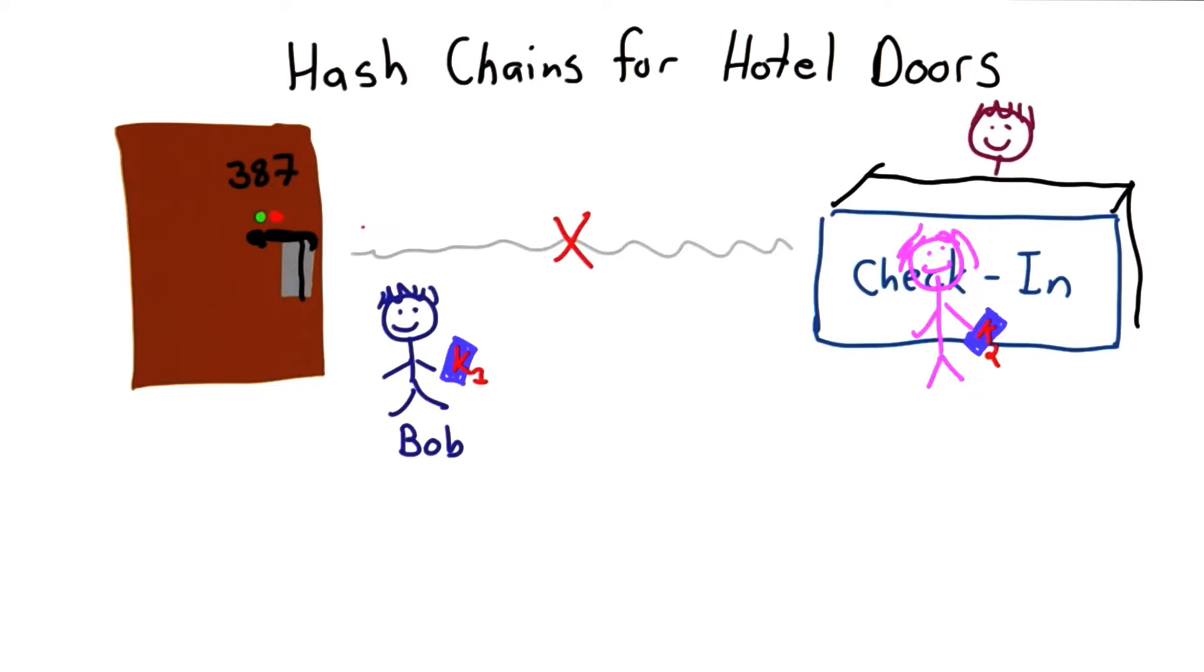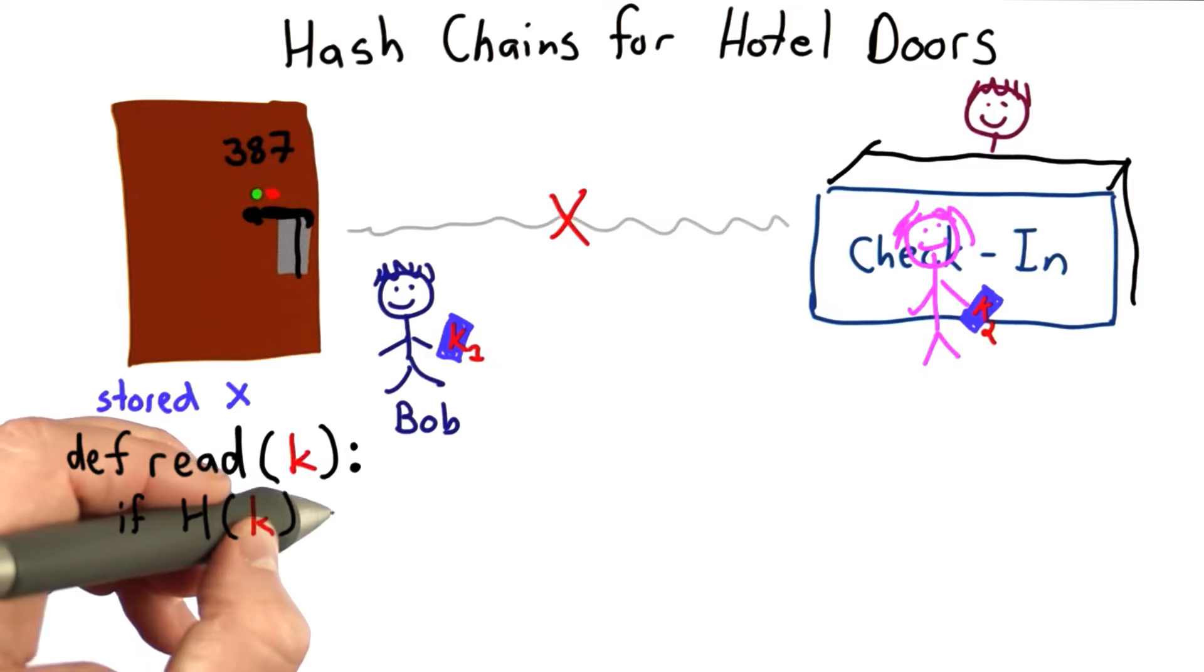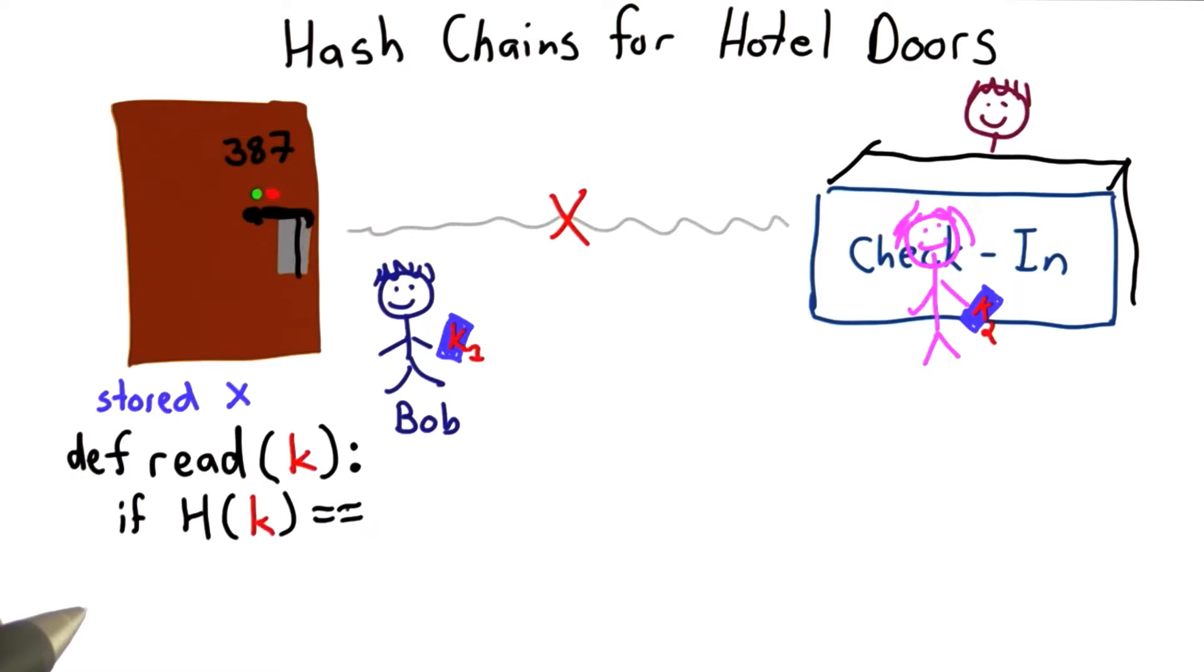One way to do that would be to use a hash chain. What the door will do is when it reads a card, and I'll write this in sort of Python-ish code, the door will have some stored value x. What the door will do is check if the value of hashing that key is equal to x, the stored value. If it is, the door will unlock, and everything's good.